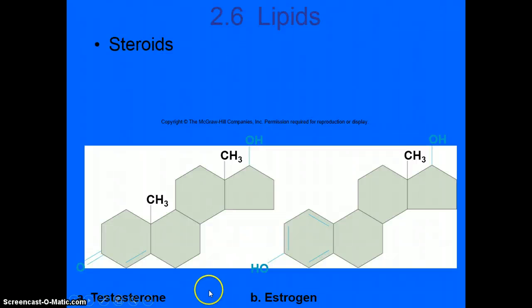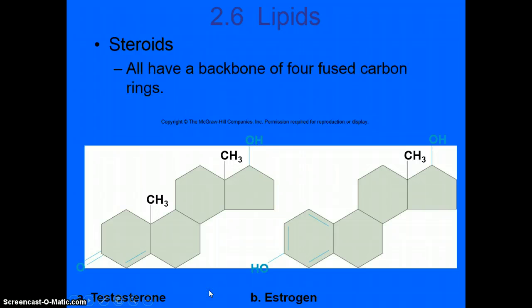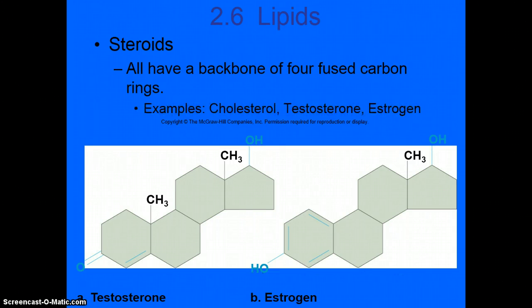Another group of lipids that you may not think of as lipids are steroids. All of them have a backbone of four fused carbon rings. And we see steroids in cholesterol, testosterone, and estrogen. So this is a picture of testosterone. This is what estrogen looks like. They're very, very similar.